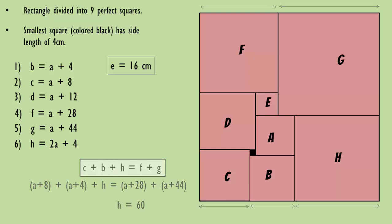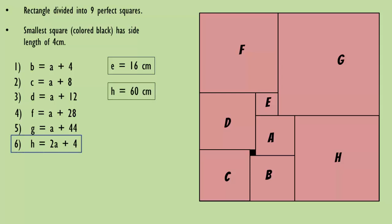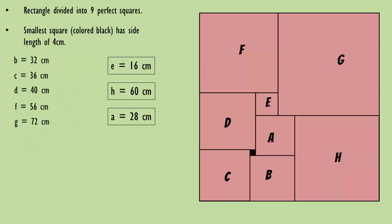Now as we have the value of H, we can put it in equation 6 and we get the value of A as 28 centimeters. Now simply put the value of A in all the five equations and we get the value of each square's side length.